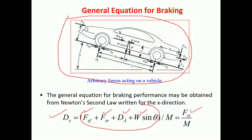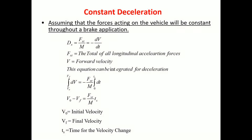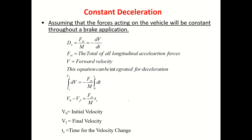The total forces in the x direction divided by mass of the vehicle gives the deceleration. Now let us find out the time required for the vehicle to stop. The deceleration equals the sum of all external forces in the x direction divided by mass, which can also be written as minus dv/dt — minus because it is decelerating, the rate of change of velocity in the negative direction.